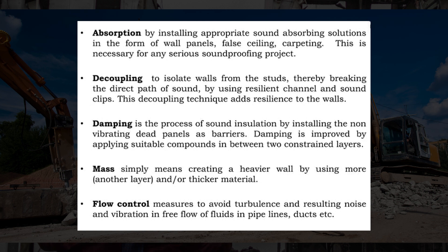The third point is damping: the process of sound insulation by installing non-vibrating damping panels as barriers. Damping is improved by applying suitable compounds between two constructed layers. The fourth is mass: simply creating a heavier wall by using more layers and thicker material. The fifth is flow control: measures to avoid turbulence and resulting noise and vibration in the free flow of fluids in pipelines and ducts.